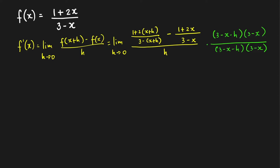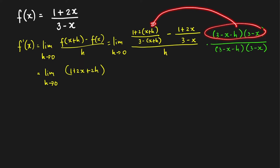After multiplying this complex fraction by that LCD over LCD, it will convert this complex fraction into a simple fraction — no more fraction in the numerator. So we get here limit as h approaches 0. In this case, when we distribute and cancel, we get 1 plus 2x plus 2h.